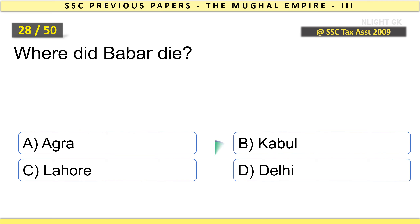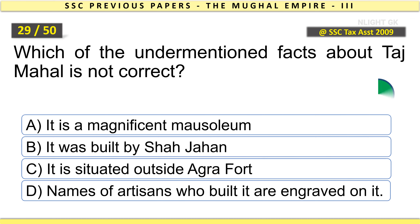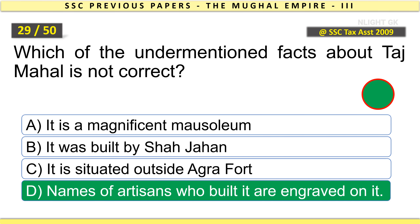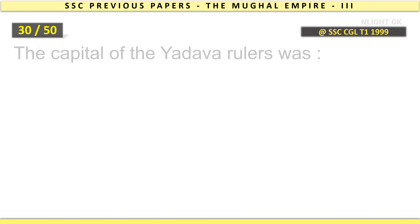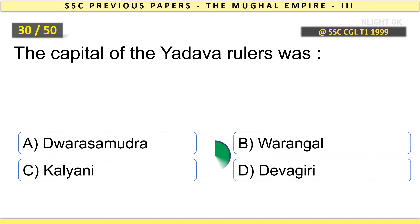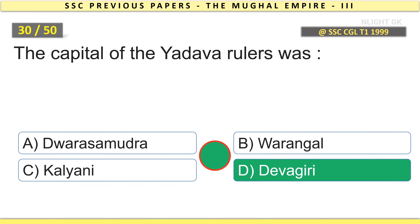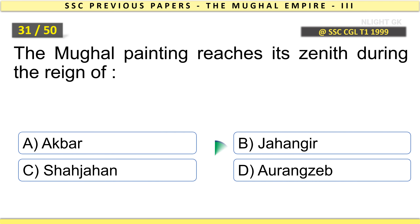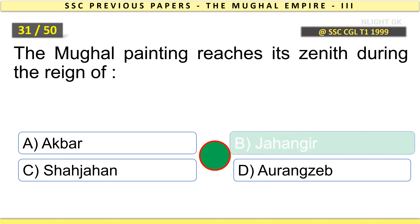Where did Babur die? Agra. Which of the following facts about Taj Mahal is not correct? The names of artisans who built it are engraved on it. The capital of the Yadava rulers was Devgiri. The Mughal painting reached its zenith during the reign of Jahangir.